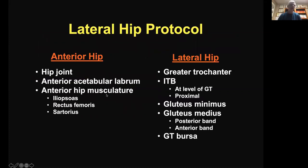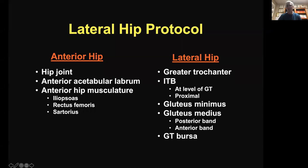My lateral hip protocol actually starts with the anterior hip — this is how I designed it from the beginning, and after a number of years it's been reinforced that starting with the anterior hip is important. With the anterior hip I look at the joint, the labrum, and several muscles. Then laterally I focus on five structures as the baseline: the greater trochanter itself, the IT band at two different levels, the gluteus minimus, both bands of the gluteus medius, and then the bursa.